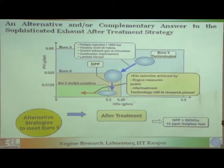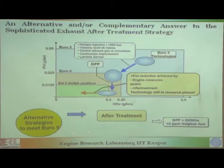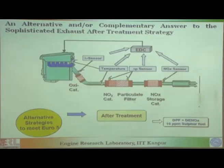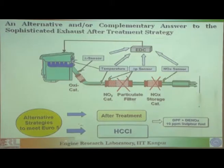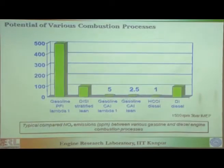From here you can reduce the NOx by engine measures, combustion optimization, or by after-treatment. For after-treatment, a lot of research is being done. Alternative strategies to meet Euro 5 — or Euro 6, as Bharat 6, which we are going to directly now — include after-treatment, DPF plus DNOX systems, and low-temperature fuel. When you implement this, you have an ECU, sometimes also called EDC — electronic diesel control. It is a microprocessor for the engine, getting feedback from the lambda sensor, temperature sensor, and if you have a particulate filter, you are measuring the pressure drop across it. Then you have a NOx storage catalyst, a NOx sensor — everything is talking to the EDC, which controls the fuel injection. Or you can do away with the particulate filter and NOx storage catalyst and go directly for HCCI, which is also able to meet the emissions.